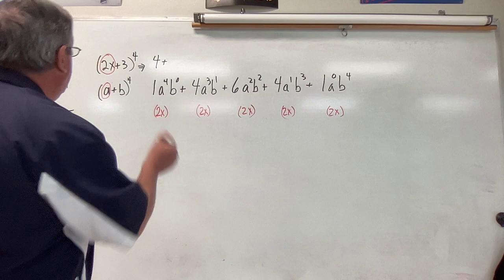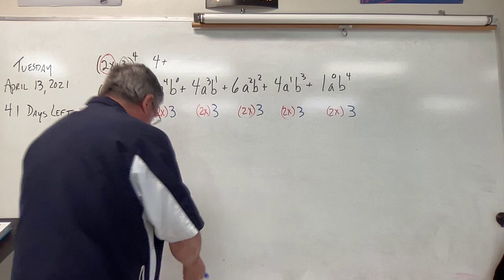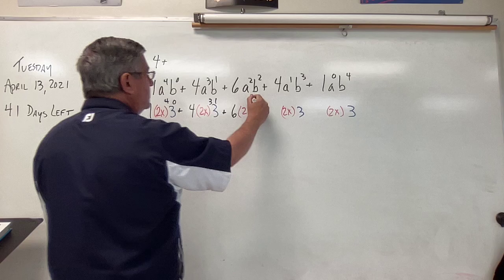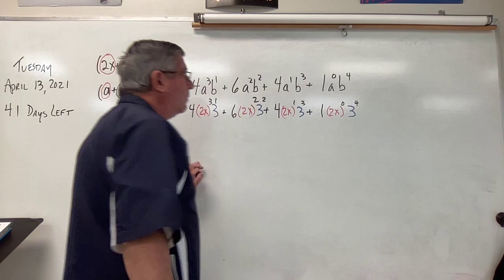The b in this case is still going to be 3. So the b is 3. And everything else stays the same. So let's just reinsert everything else. This 1, the 4, the 0, the plus, the 4, the 3, the 1, the plus, the 6, the 2, the 2, the plus, the 4, the 1, the 3, the plus, the 1, the 0, the 4.